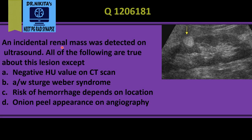An incidental renal mass was detected on ultrasound. This is an ultrasound image showing the kidney, and we see a well-defined hyperechoic — that is, white — mass in the kidney. It is uniformly hyperechoic or echogenic, which indicates fat, since fat is hyperechoic on ultrasound. So this is a fat-containing lesion.